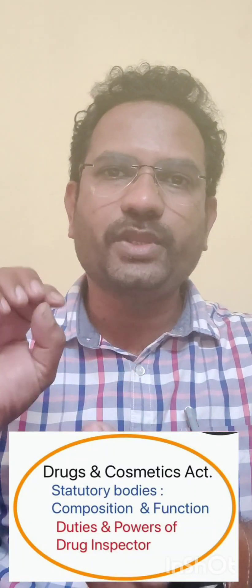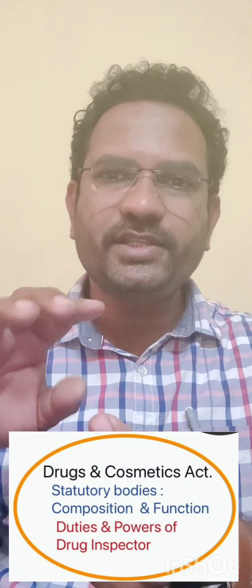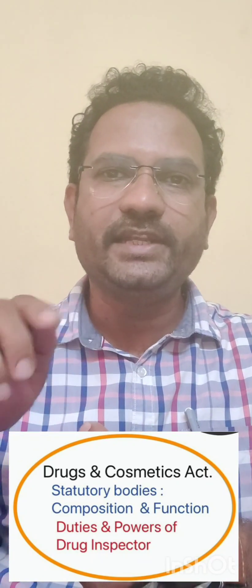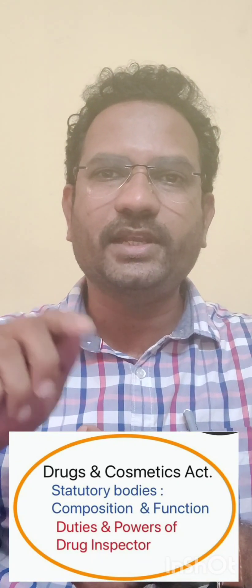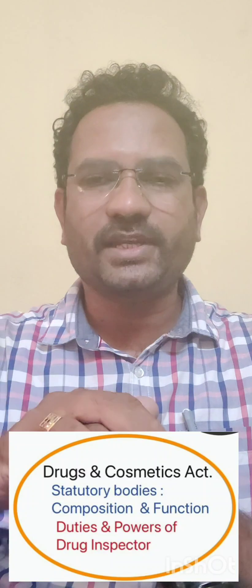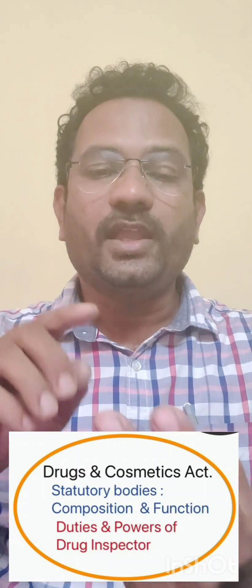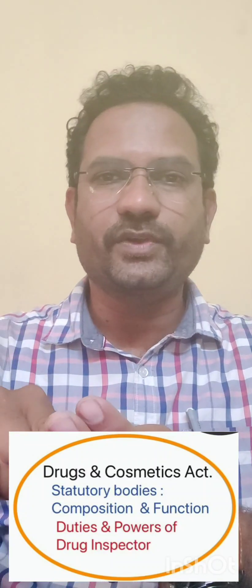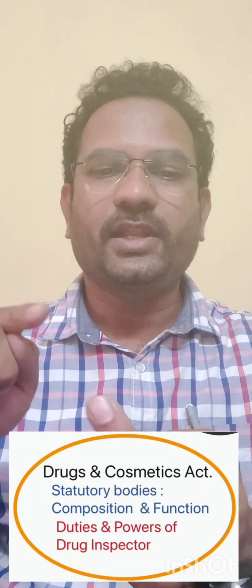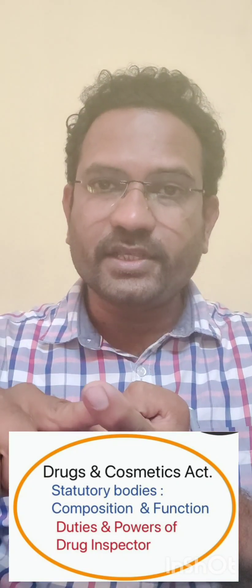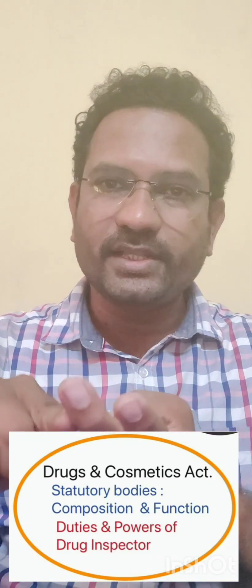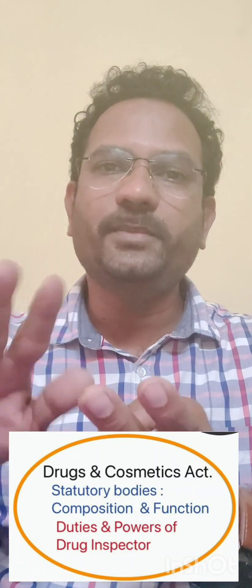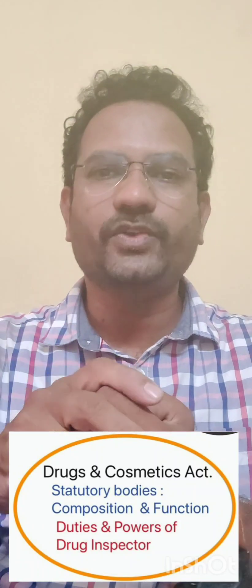The advisory authority's job is to give advice regarding drugs and cosmetics. The Drug Technical Advisory Board (DTAB) comes under this category. The executive authority includes the drug inspector, licensing authorities, controlling authorities, and customs control — all of them come under this executive authority.